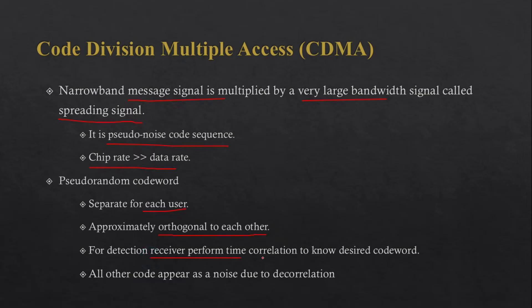For detection, the receiver performs time correlation to identify the desired code word. If there is autocorrelation, that means the signal is detected; otherwise all other codes or signals will appear as noise due to decorrelation. This is how, with the help of the code, the user will be identified by the base station in CDMA.